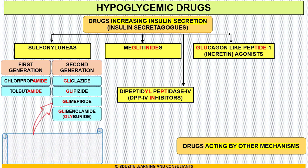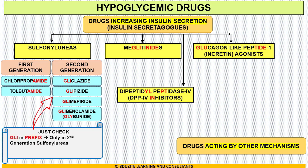If you observe, in all these second generation drugs, the letters G-L-I appear as a prefix — at the beginning of the words. In all the other drug categories, G-L-I or G-L-U will come as an infix, in the middle of the words.